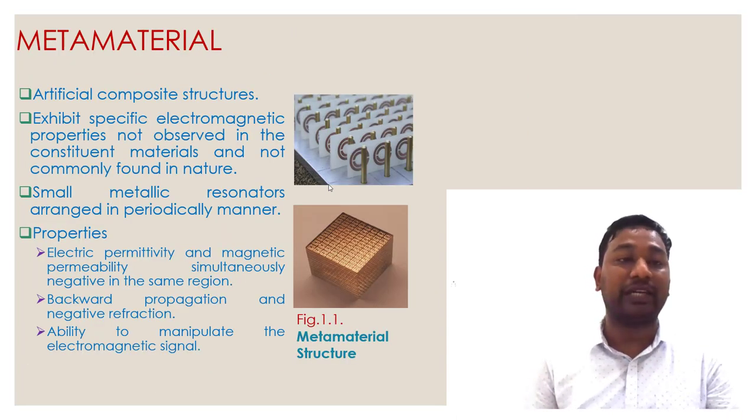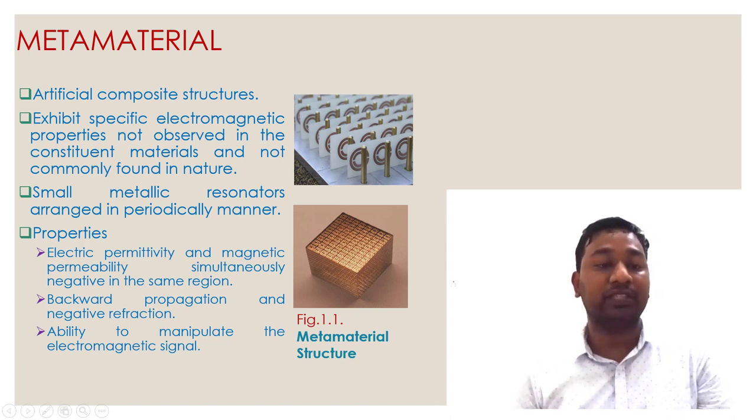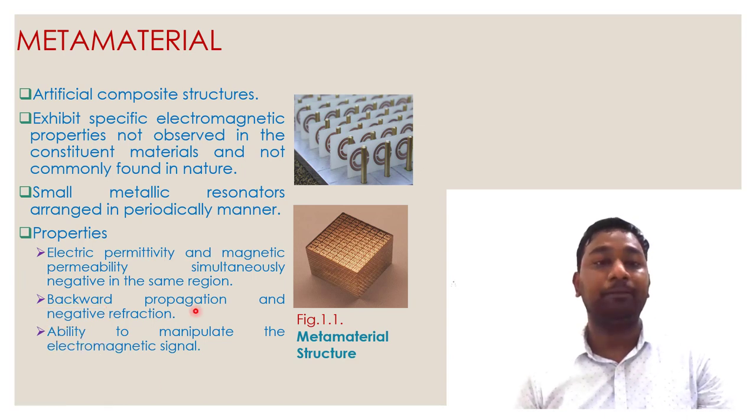Now what is metamaterial? Metamaterial is an artificial composite structure that exhibits specific electromagnetic properties that are not available in nature. Small metamaterial resonators are enriched in a periodic manner with electrical permittivity and magnetic permeability simultaneously negative in the same region.